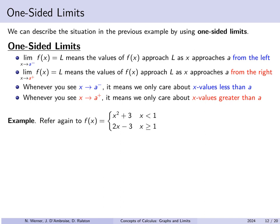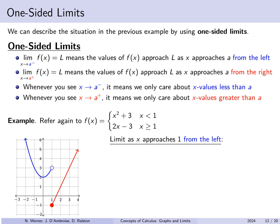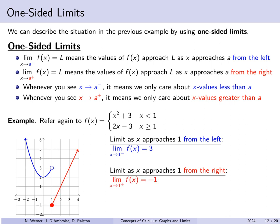When you see x with an arrow to a and a superscript minus, you are only considering values of x less than a. When you see the superscript plus, you are only considering values larger than a. Looking at the same graph: the limit as x approaches 1 from the left — x approaching 1 from the left side — gives heights approaching 3. If x approaches 1 from the right, the height approaches minus 1.